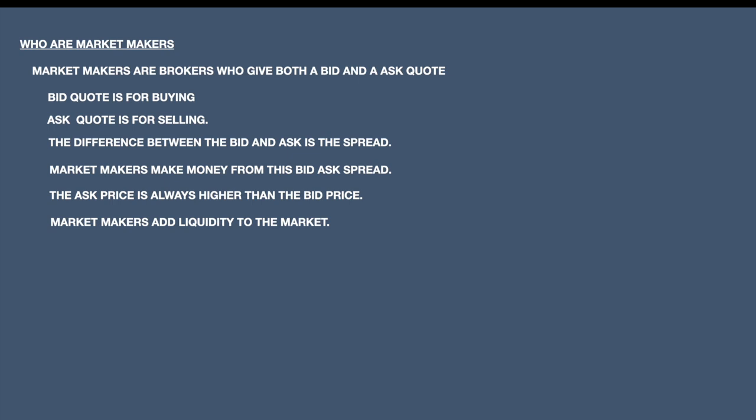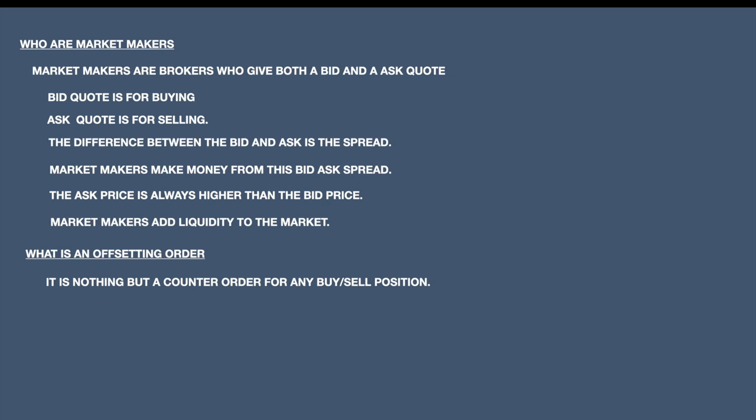The main purpose of the market maker is they add liquidity to the market. What is an offsetting order? It is nothing but a counter order for any buy or sell position. If you are buying, some seller should be there; and if somebody is selling, a buyer should be there. This is known as a counter order or offsetting order.